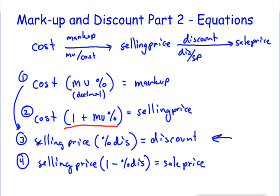cost times markup percent equals markup, cost times one plus the markup percent equals selling price, meaning you're going straight from cost to selling price and avoiding the actual dollar amount, and then selling price times percent discount equals discount, and selling price times one minus percent discount equals sale price.